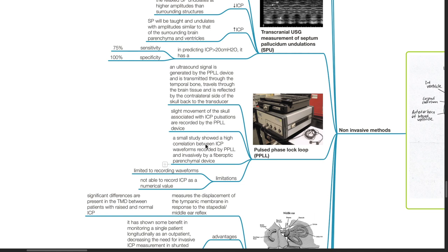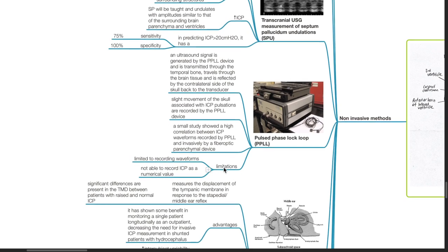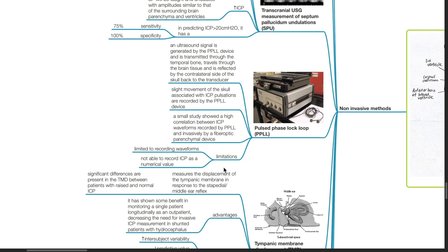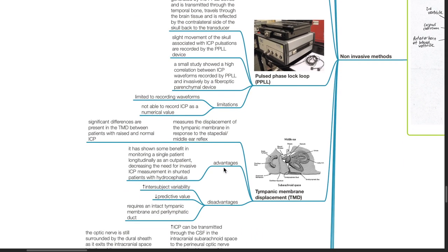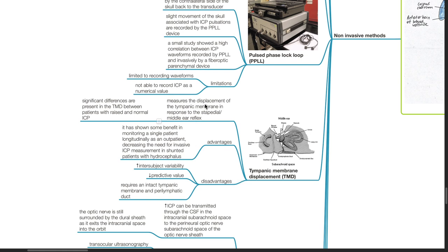Limitations: it is limited to recording waveforms and not able to record ICP as a numerical value. Tympanic membrane displacement. It measures the displacement of the tympanic membrane in response to the stapedial or middle ear reflex. Significant differences are present in the TMD between patients with raised and normal ICP. Advantages: it has shown some benefit in monitoring a single patient longitudinally as an outpatient, decreasing the need for invasive ICP measurements in shunted patients with hydrocephalus. Disadvantages: inter-subject variability, low predictive value, and requires an intact tympanic membrane and perilymphatic duct.